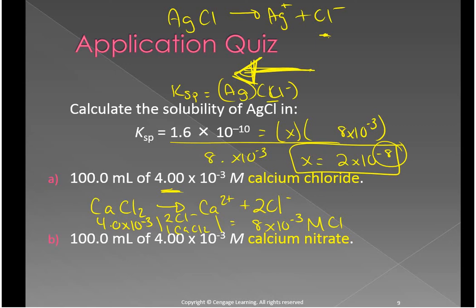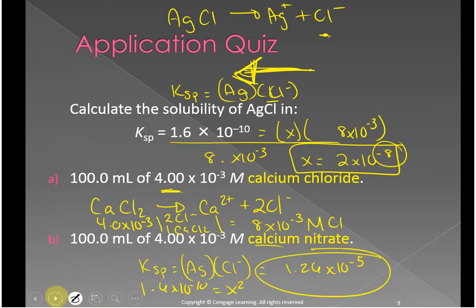If we add in calcium nitrate, calcium and nitrate are not involved in this expression whatsoever. So it's just going to be our KSP is equal to Ag⁺ times Cl⁻. Since we know that this is 1.6 × 10⁻¹⁰ is equal to x². Take the square root of both sides. And you're still going to get that same 1.26 × 10⁻⁵. Much more soluble. Doesn't have any effect because there's no common ion here.